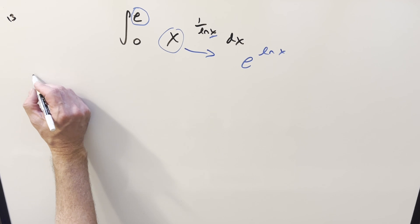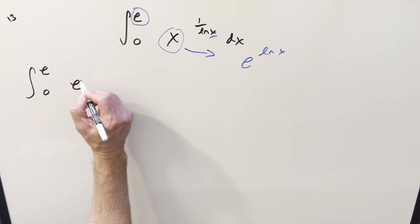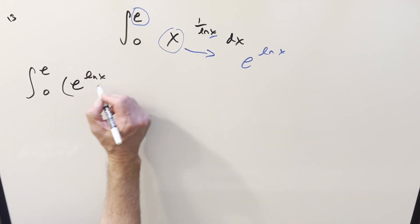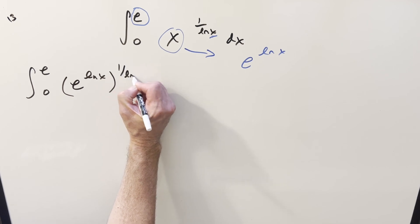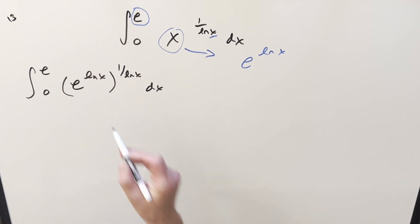So let's just rewrite the integral, plugging this in. We're going from 0 to E. We have e to the ln x to the 1 over ln x. But now with exponent properties, I can just multiply this in here. ln x times 1 over ln x, that's going to cancel.